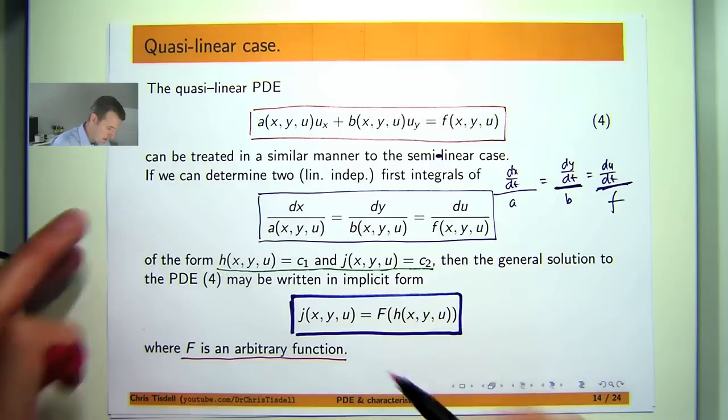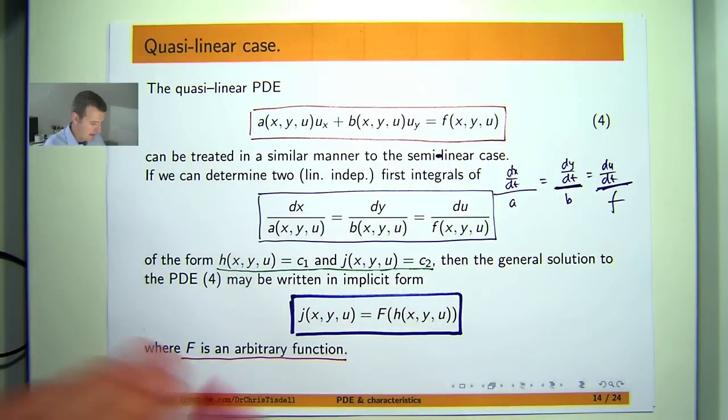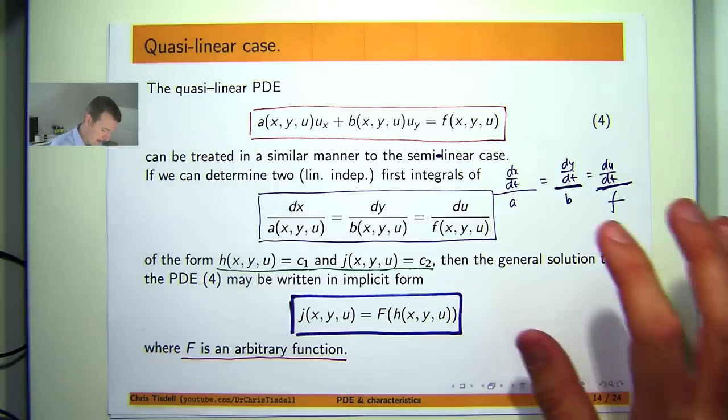Essentially you take your h and you take your g and you just form a functional relationship between them using this big F. So how does it all work?